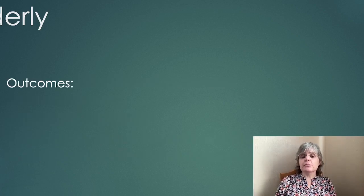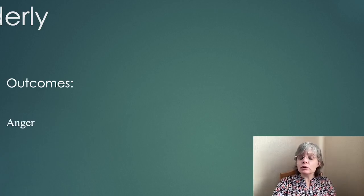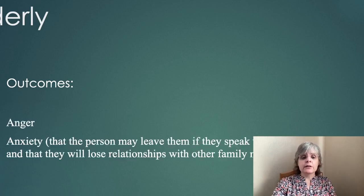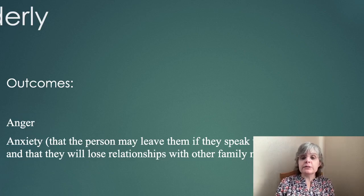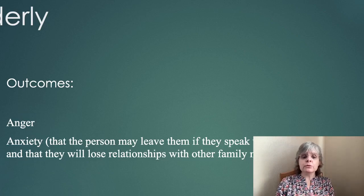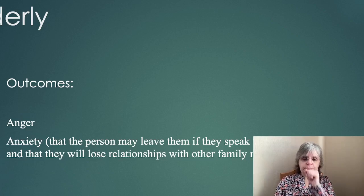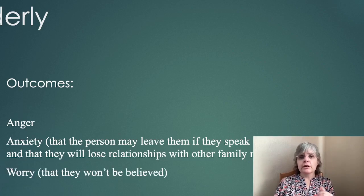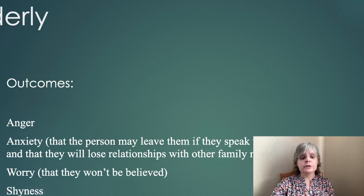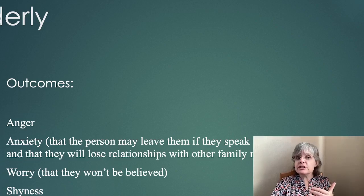What are some of the outcomes of being treated in this way? The older person can become angry and anxious — anxious that the person may leave them if they speak up, that they'll be left all on their own with no support, that they'll lose relationships with other members of the family such as their grandchildren. They don't speak up because they don't want to lose their grandchildren. Worry: if I speak up, who will believe me? They might cause people to think badly of them. They could be shy, uneasy, with weak eye contact because they're living with a sense of shame and fear.